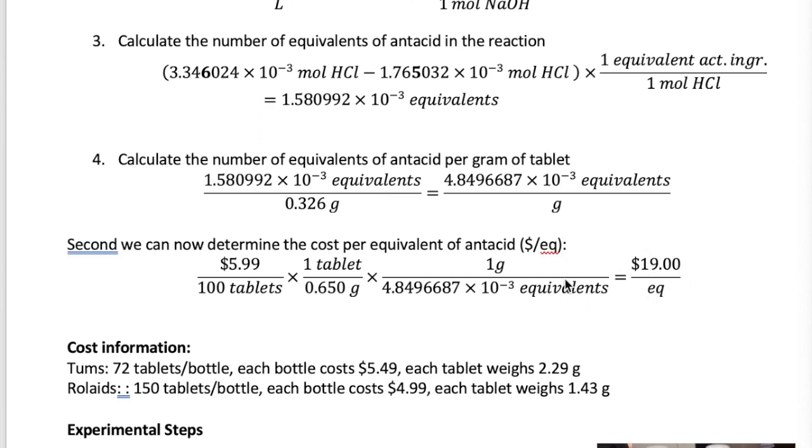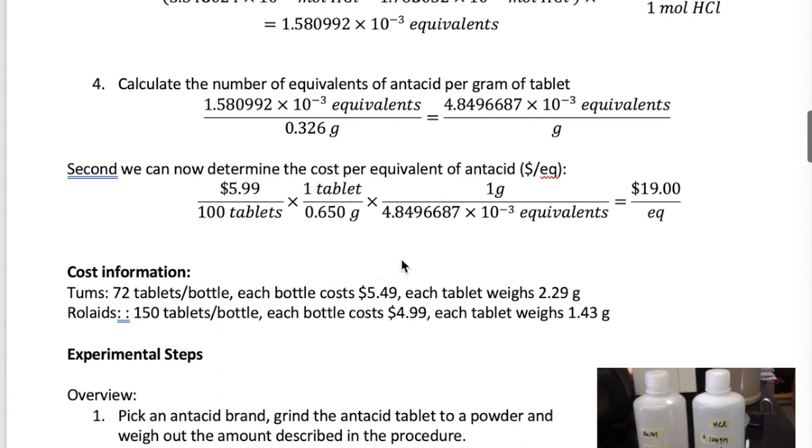So this calculation is the one that you will be performing in your experiment today. And what you're going to do is compare the cost effectiveness of two antacid brands. So here I'm giving you the cost information for the two brands of antacid you will use. Your goal is to compare the cost effectiveness of these two brands by calculating the dollars per equivalent for each brand and seeing which one is cheaper.